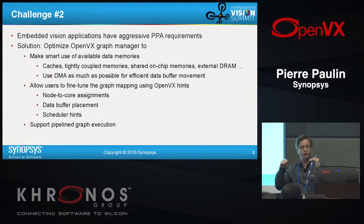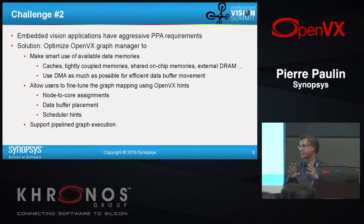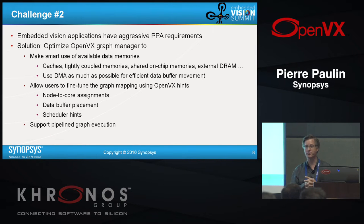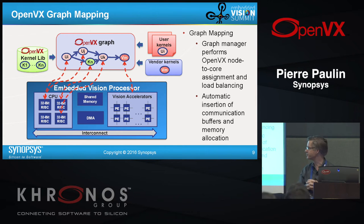The hints are just about high-level classes: is it cached, is it in DCCM, is it in on-chip shared memory, or should it be forced off-chip? The runtime then handles DMA or cache coherency to move that data. We also have provisions for scheduler hints to guide the scheduling and ordering of events. The graph manager supports pipeline graph execution, both coarse-grain and tiling-based. Graph mapping takes different nodes — from the standard 41-function library, user kernels, or vendor kernels — and assigns them to processing resources.